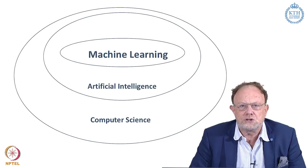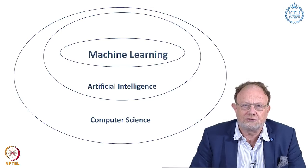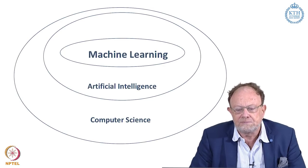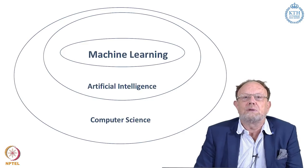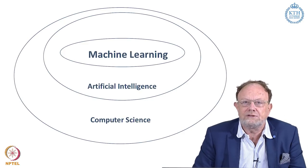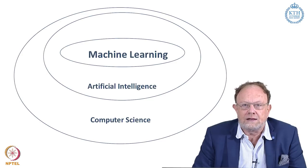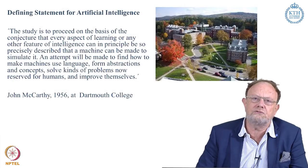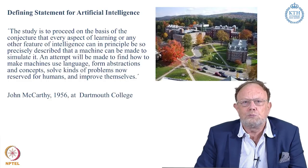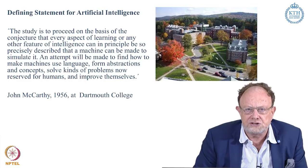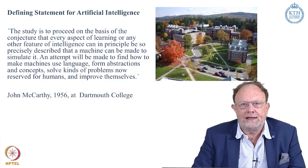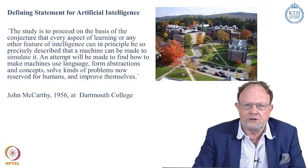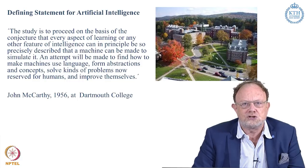Machine learning is an area which is part of artificial intelligence, which in turn is a part of computer science. These days you hear a lot about this area, but actually the area is not new — it's actually 62 years old. In 1956, a small group of researchers met at Dartmouth College in the U.S. with the intention to found a new area that they termed artificial intelligence.